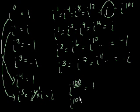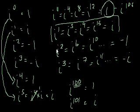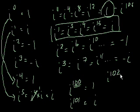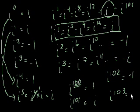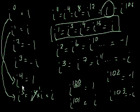Similarly, i to the 101st power is going to equal i, because 101 equals 100 plus 1 — 100 is a multiple of 4, and 101 is a multiple of 4 plus 1. i to the 102nd power would equal negative 1, and i to the 103rd power would equal negative i. All I did is define i as the square root of negative 1, then keep multiplying i to figure out a pattern: i to the 0 equals 1, i to the 1st equals i, i squared equals negative 1, i to the 3rd equals negative i, and then i to the 4th equaled 1 again — and the pattern repeated itself.